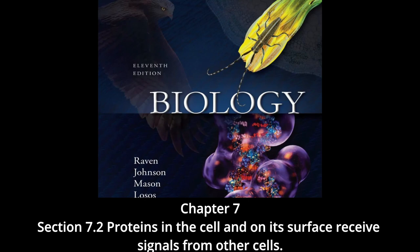Lipid-soluble signal molecules tend to persist in the blood far longer than water-soluble signals. Most water-soluble hormones break down within minutes and neurotransmitters within seconds or milliseconds, while a steroid hormone like cortisol or estrogen persists for hours. The target cell's response to a lipid-soluble signal varies enormously depending on cell type, even when different cells have the same intracellular receptor — because the DNA binding sites differ between cell types, and because most eukaryotic genes have complex controls involving several regulatory proteins.